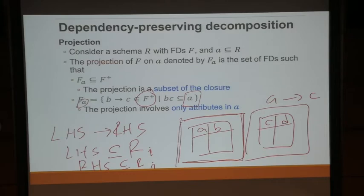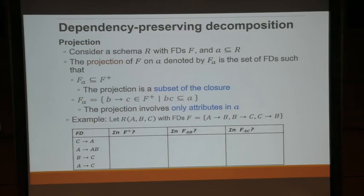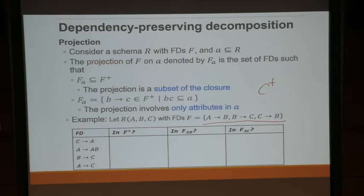Let's have an example to understand projection. Given F = {A to B, B to C}, you want to find F_AB. Is C to A in F+? We try to compute C+: A is not in C+ because A is not on any right-hand side. So C to A is not true. A to AB is definitely in F+. B to C is in F+ because it's in F. A to C is in F+ because it's implied. Now, A to AB: is it in F_AB? It only involves A and B, so yes. But B to C has C which is not in AB, so it is not in F_AB. A to C has C not in AB either, so it is not in F_AB.